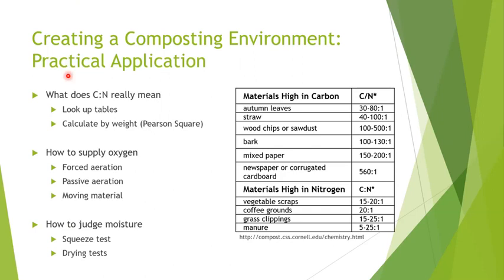While it is important to know the desired C:N ratio, oxygen percent, and moisture percent, it isn't necessarily directly applicable to practical compost management. All organic matter has a specific molecular composition that will dictate a range of ratios in which carbon and nitrogen exist within that material. These material-specific ratios can be found in lookup tables that display a list of materials with a wide range of C:N ratios.